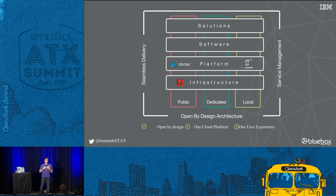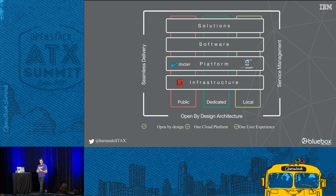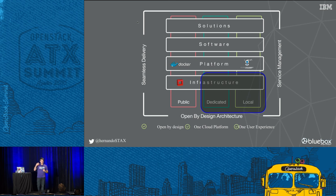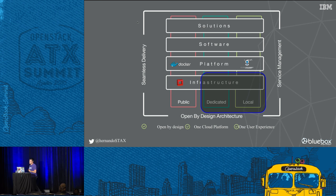The IBM Cloud OneCloud platform is built on the notion that you can deliver comprehensive services across the three main deployment mechanisms: public, dedicated, or local. What we're talking about today is Bluebox, which focuses on dedicated and local infrastructure as a service. There's a high level of consistency across not only the three deployment mechanisms but also the platform. IBM Cloud includes Bluemix, software and solutions, and cognitive solutions from IBM Watson — all meant to be delivered and consumed in the way most appropriate for the business.